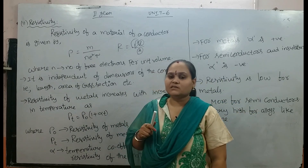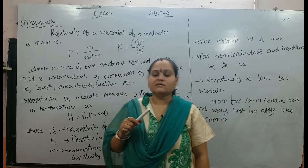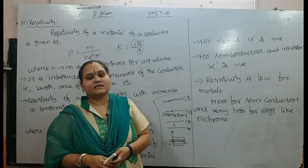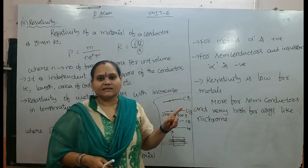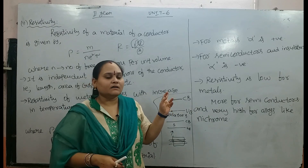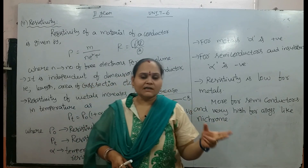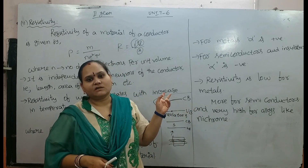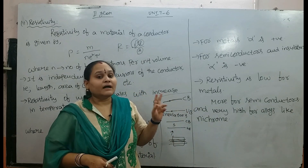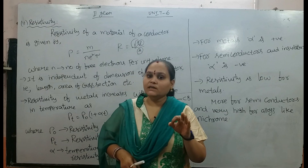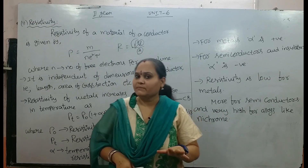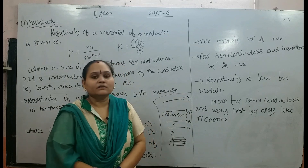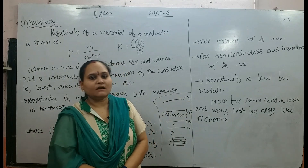The temperature coefficient alpha is positive for metals and negative for semiconductors and insulators. Resistivity is very low in metals, higher in semiconductors, and very high in alloys like Nichrome.